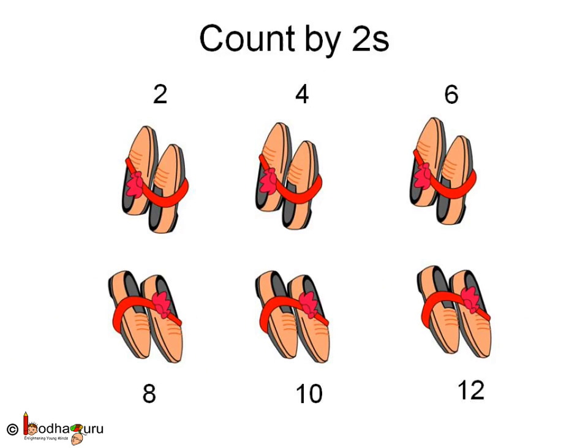What is the use of skip counting? In a shoe store, pairs of shoes are kept. How do we count them? Two, four, six, eight, ten, twelve. So skipping one number also means counting by twos. Here we are counting by twos, which means adding two to the previous number: zero plus two is two, two plus two is four, four plus two is six, six plus two is eight, and eight plus two is ten. So we got two, four, six, eight, ten.